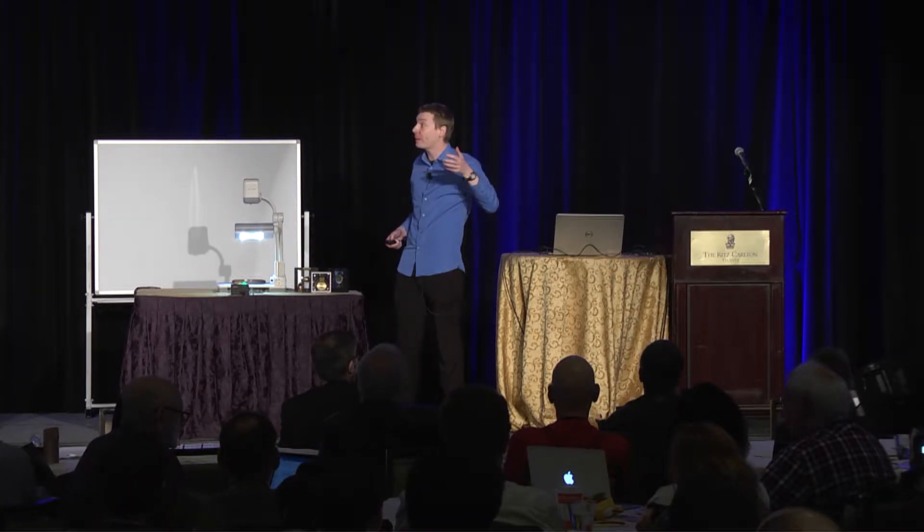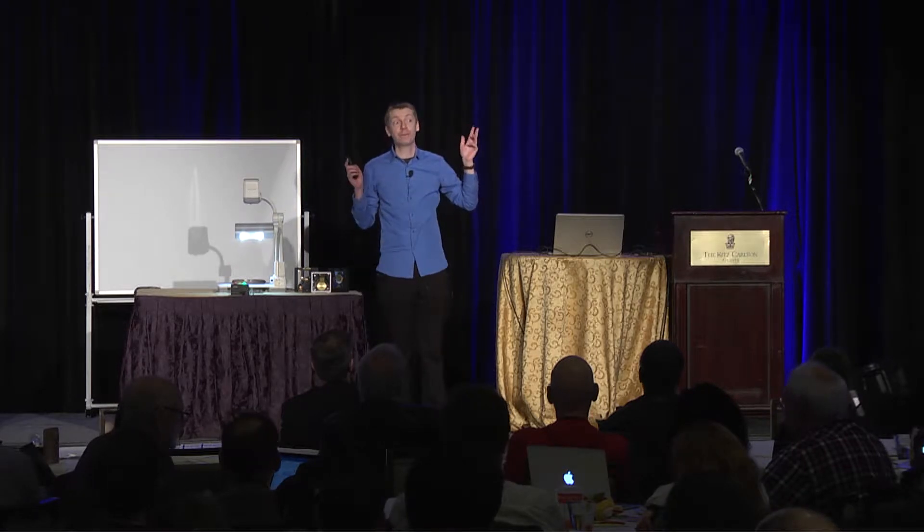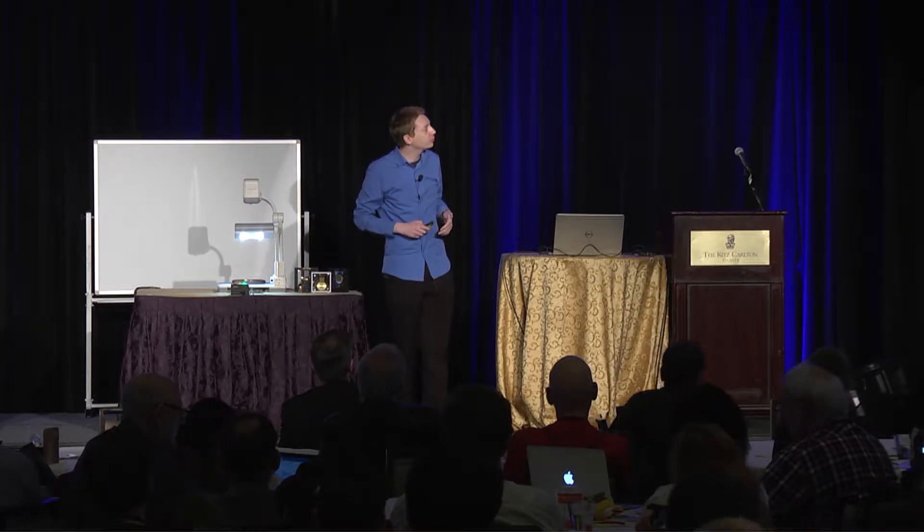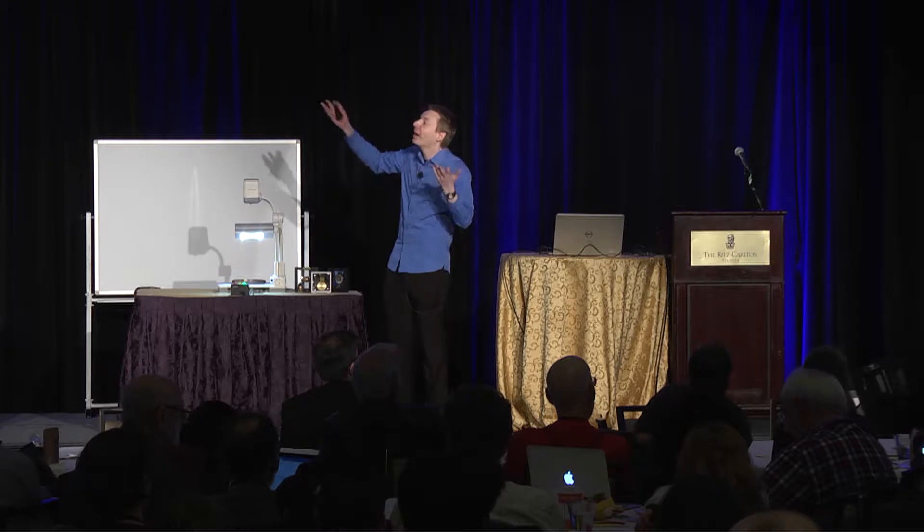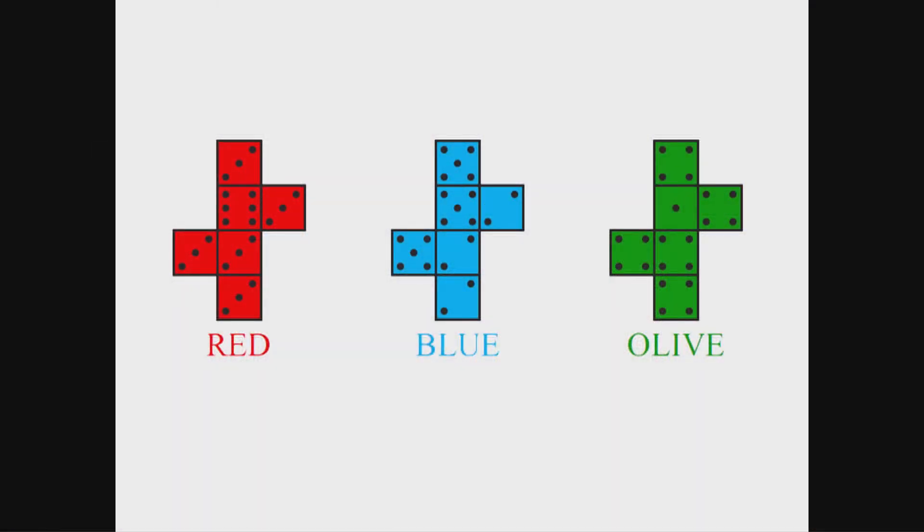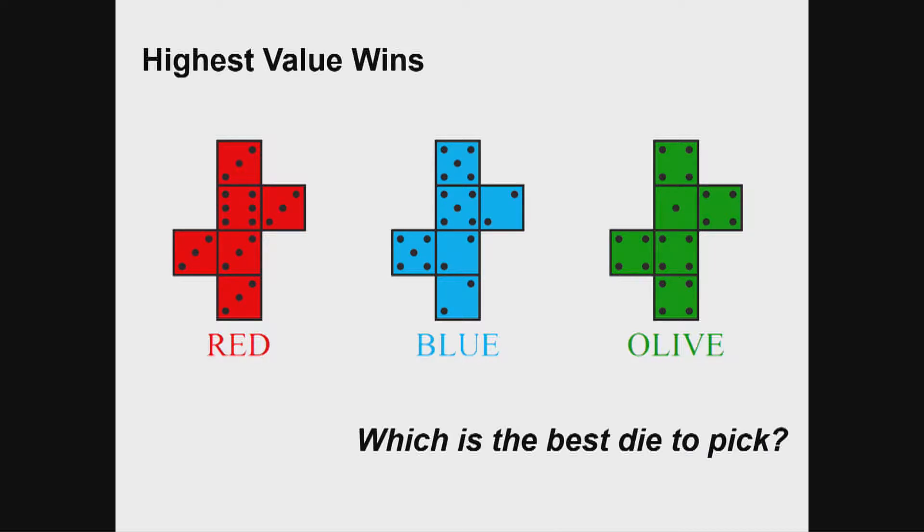A few years ago, I made a video about non-transitive dice. So for anyone who doesn't know, non-transitive dice, they're a set of three dice here. They haven't got the regular numbers on them though. But the game is, you play an opponent, you each pick a die, you roll them, whoever has the highest value wins. And the question is, which is the best die to pick?